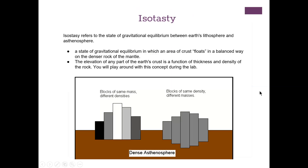Next we'll go on to isostasy. Isostasy refers to the state of gravitational equilibrium between Earth's lithosphere and asthenosphere — a state in which an area of crust floats in a balanced way on the denser rock of the mantle. The elevation of any part of Earth's crust is a function of its thickness and density. You will explore this concept during the lab, and at the end of this lecture I'll flip through the relevant lab section.